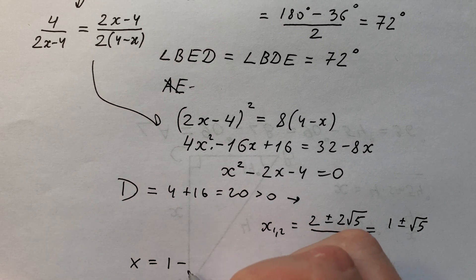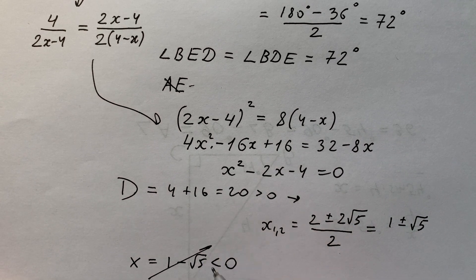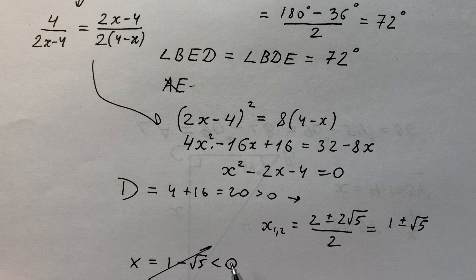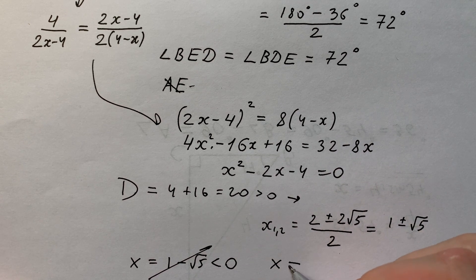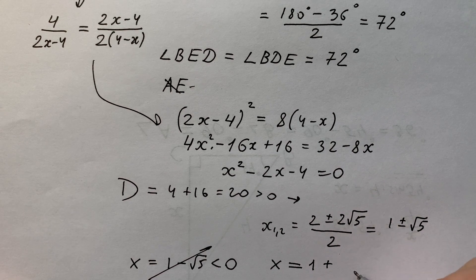x equals 1 minus √5 is less than 0, and it's impossible because length of triangle cannot be less than 0.